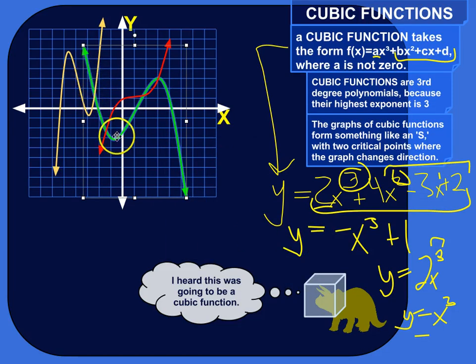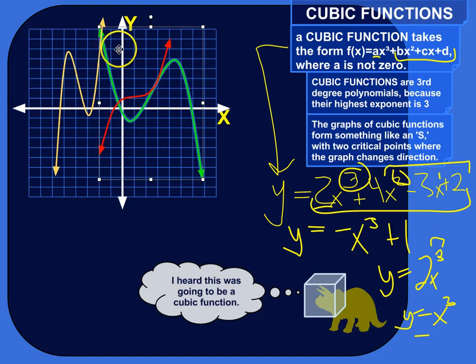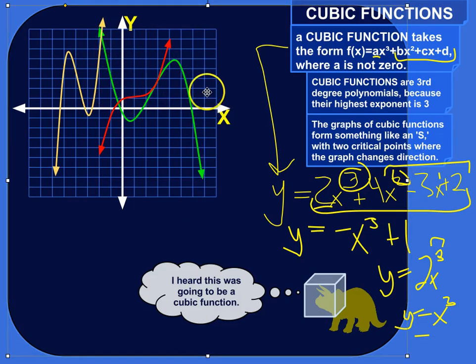Where it's going down, and it flips, and it goes up, and then it flips again. So it's two critical points, and that's kind of, and then both ends of the graph just go off into infinity.